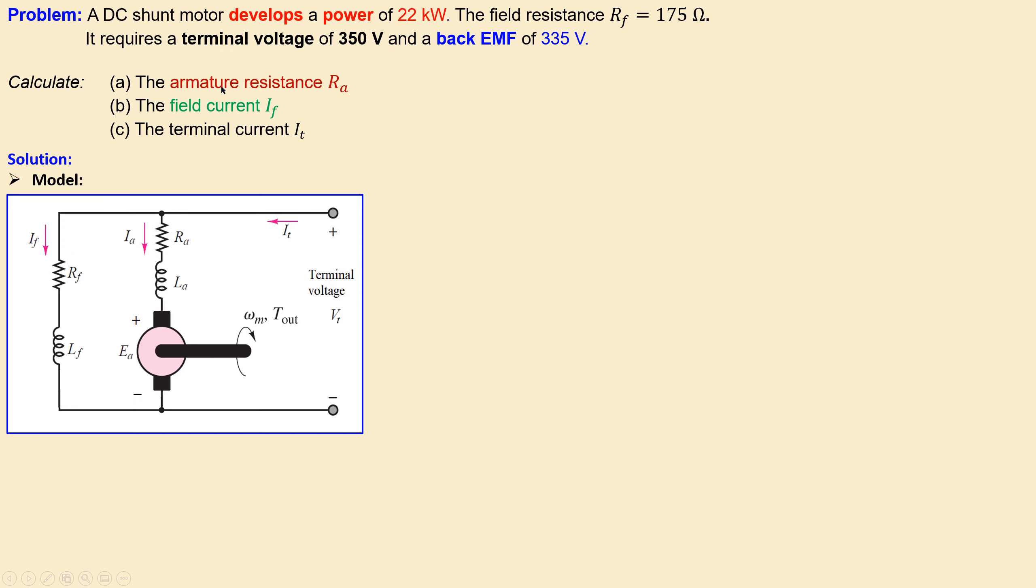So how do we start? Let's start with question A, the armature resistance R_a. Before we move on, the given information again in summary here in the list: the developed power, the terminal voltage, the back EMF and also the field resistance.